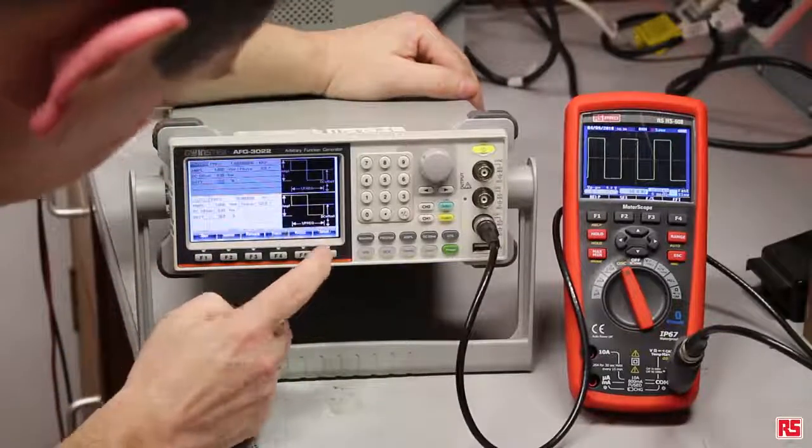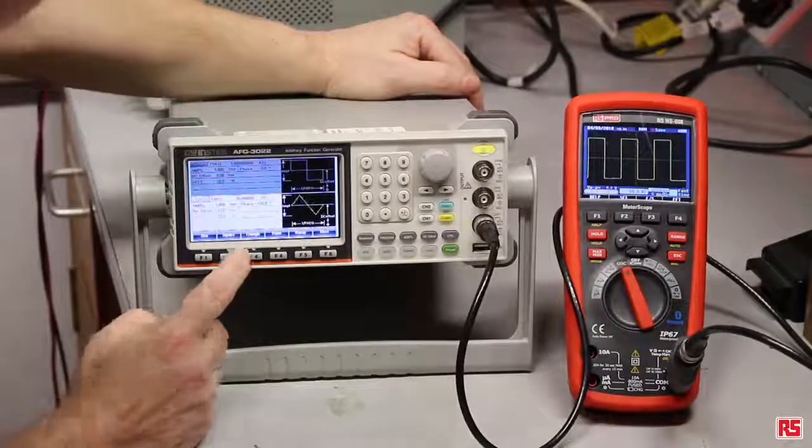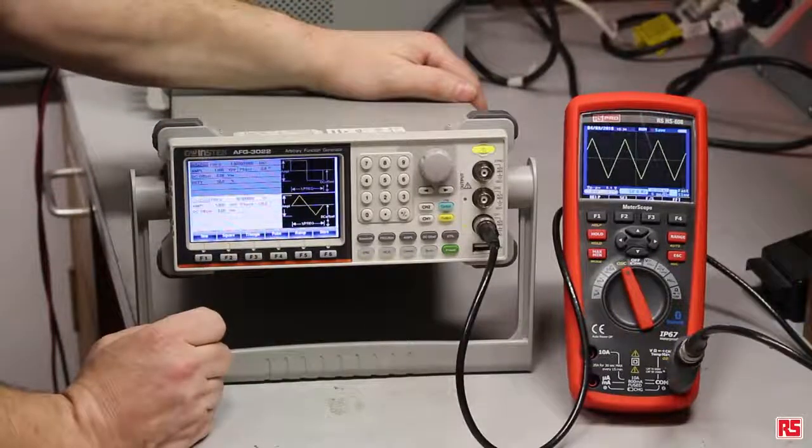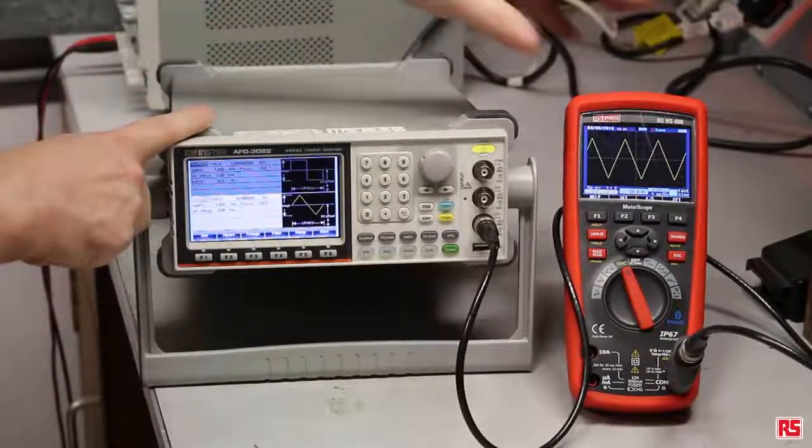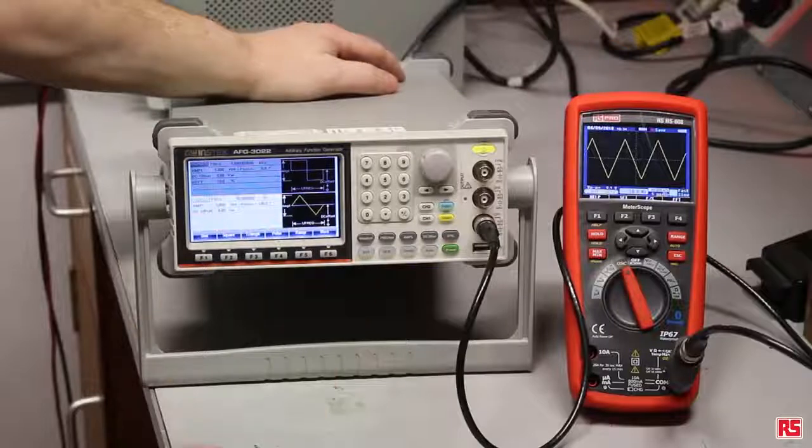Let's return a triangular wave and you can see how quickly that changes as well. So if I actually just change the frequency of the waveform on the function generator you should see it pick up on the meter scope as well.